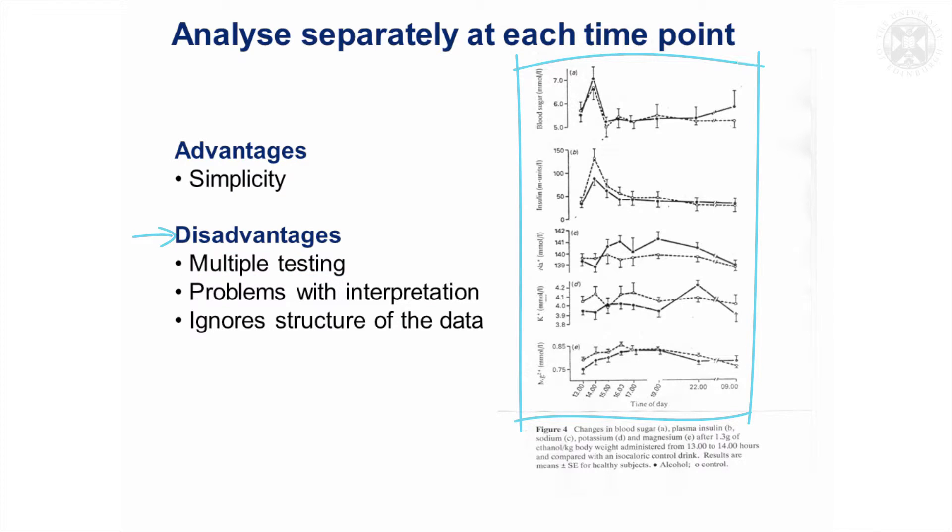This is just some graphs from an experiment looking at five different measurements where they've presented the means and standard errors at each time point. And you can sort of look at those and think, well if I analyzed at every time point, I might get quite confusing results because look at this one, they might get a significant difference there in one direction and then one here in another direction. Other parts of the curve would be non-significant, and it would be quite confusing to know how to interpret that.